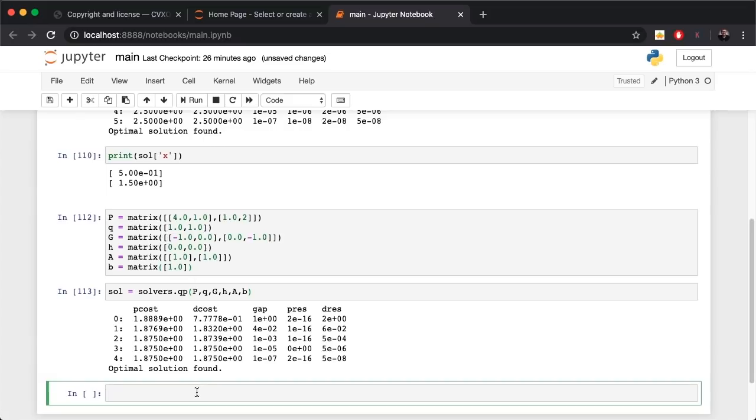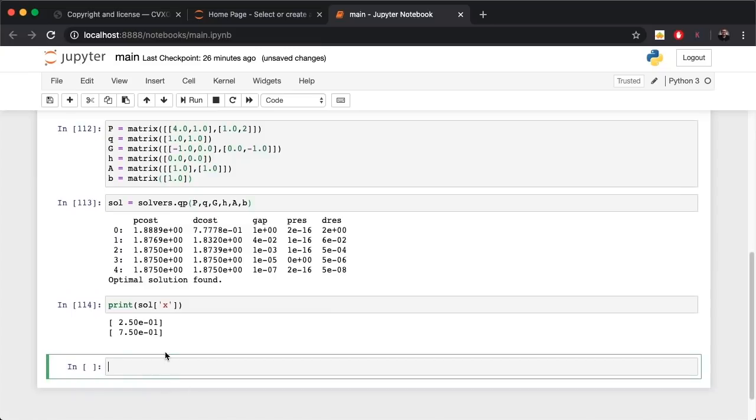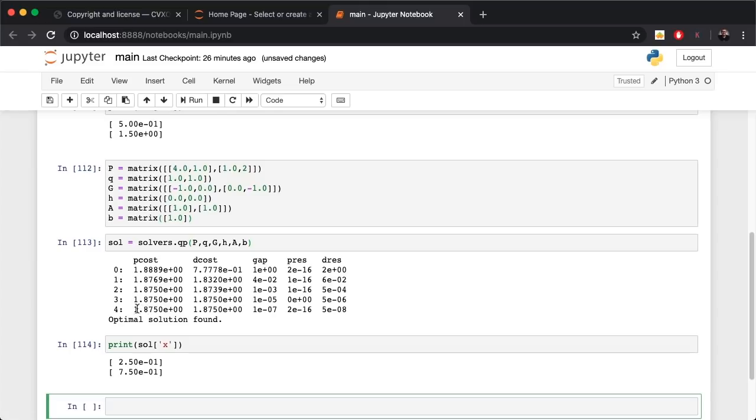What is it? Let's print it as such: sol['x']. And there you go, 2.5×10⁻¹ so it says 0.25 and 0.75. The minimum cost function is evaluated as 1.87.